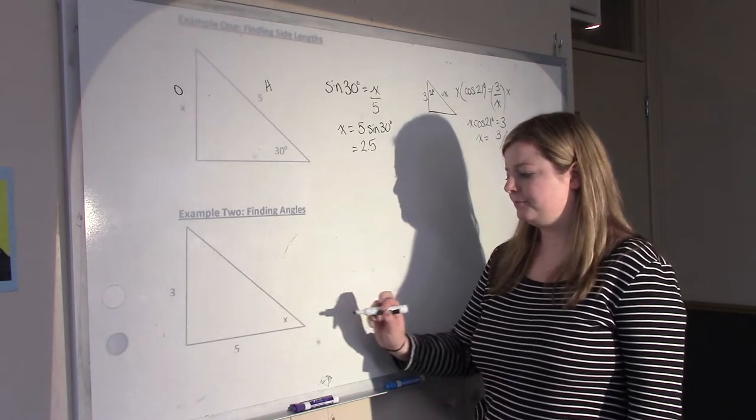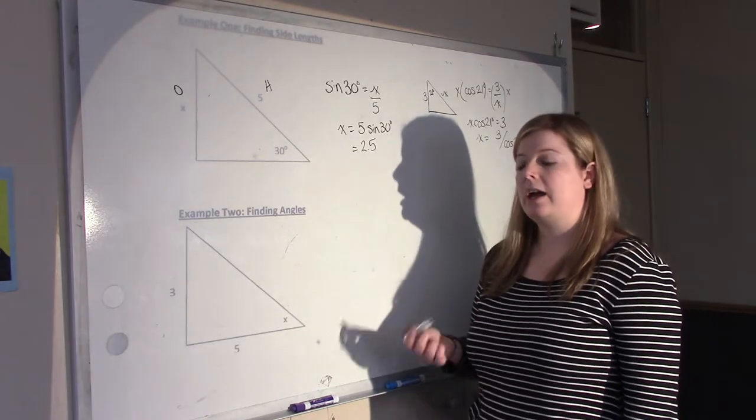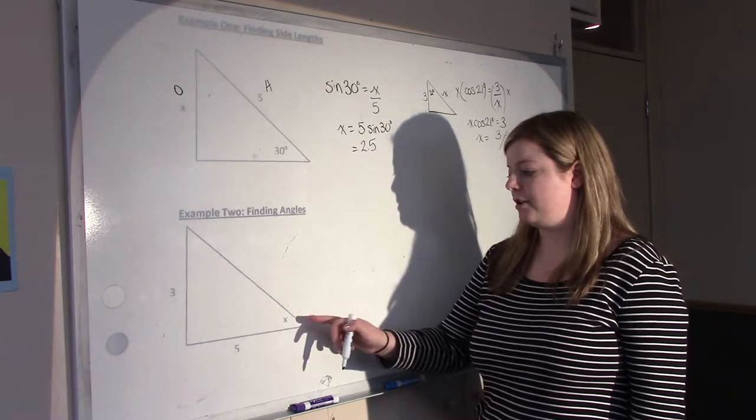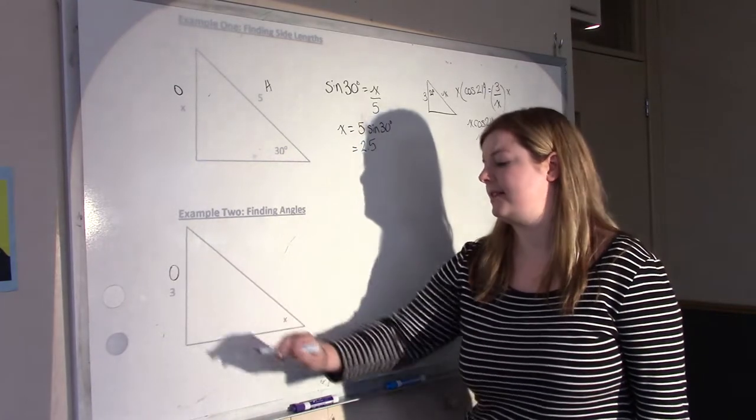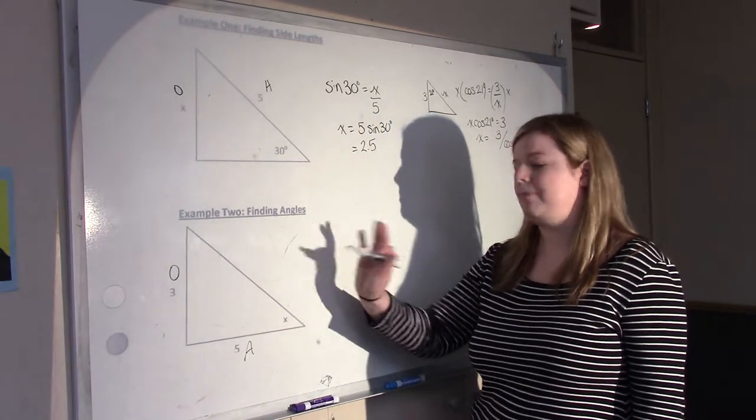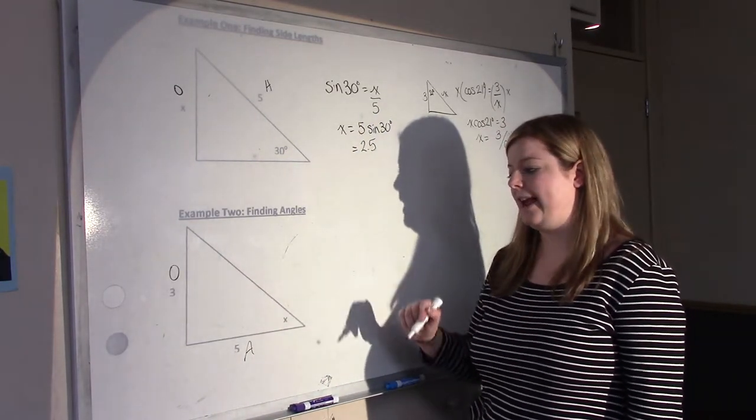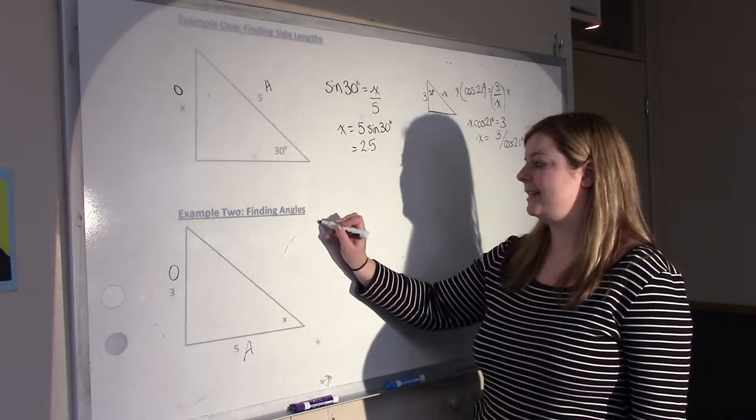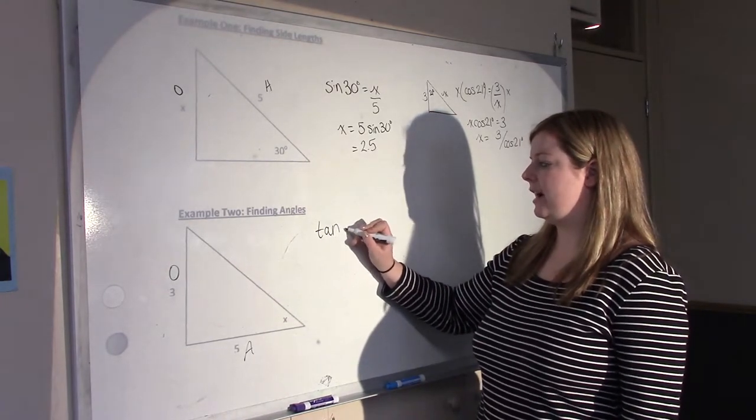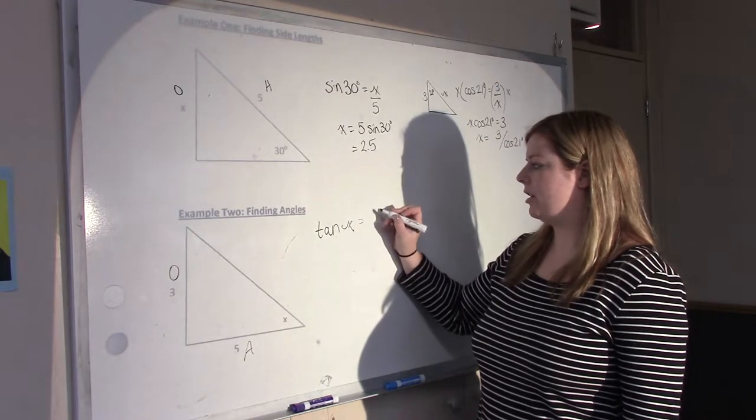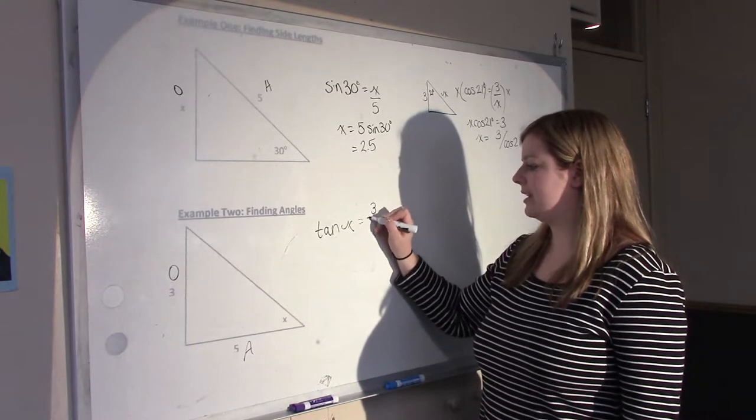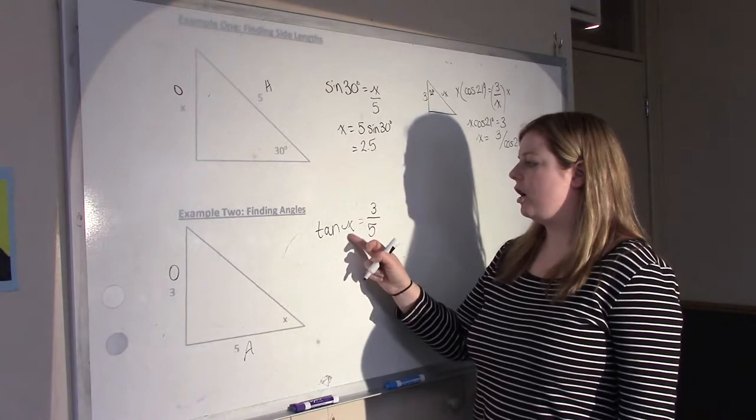So when you're trying to find the angle, first you need to see which lengths you know. So in this case, you know opposite and you know adjacent. Hypotenuse isn't involved at all. So O and A, that's TOA, that's tan. So the tan of X, we don't know that angle, is equal to opposite, so 3 over adjacent, so 5.